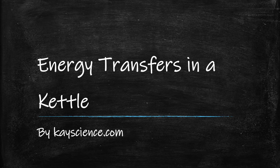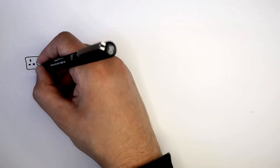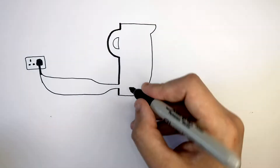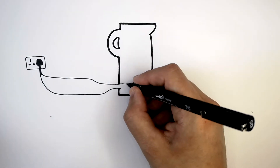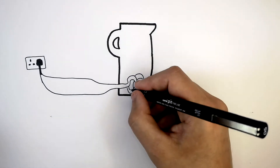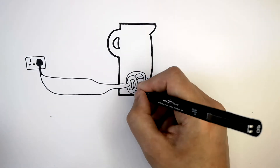Energy Transfers in a Kettle by kscience.com. This here is a kettle connected to a main socket, and what I'm drawing now is the heating element inside the kettle.